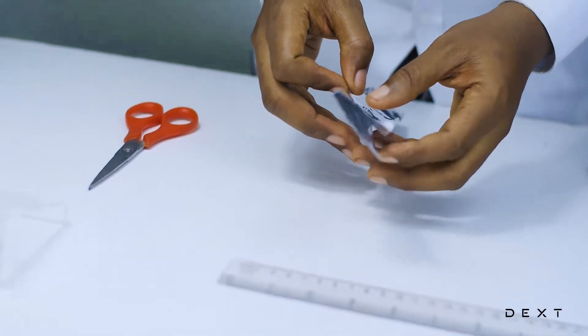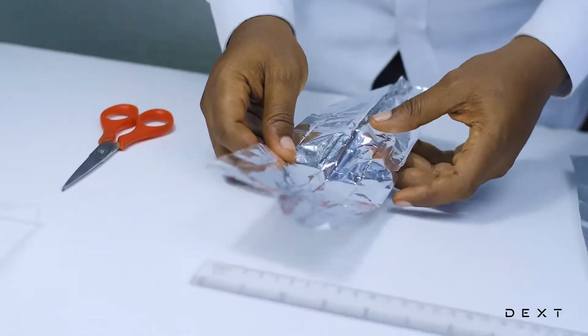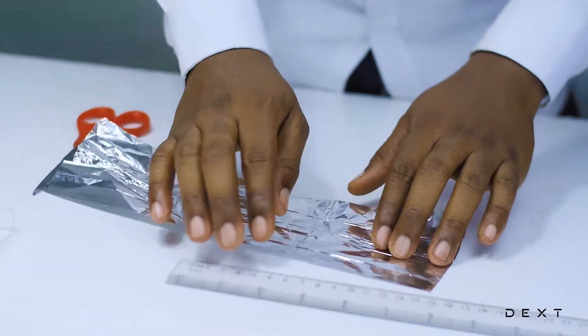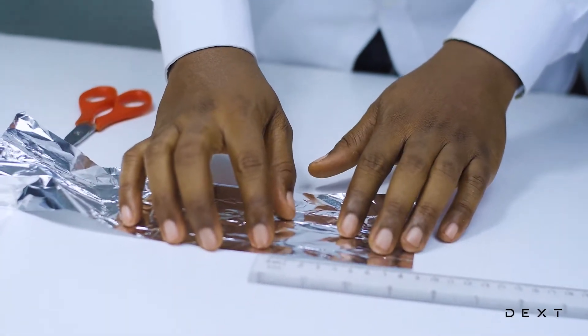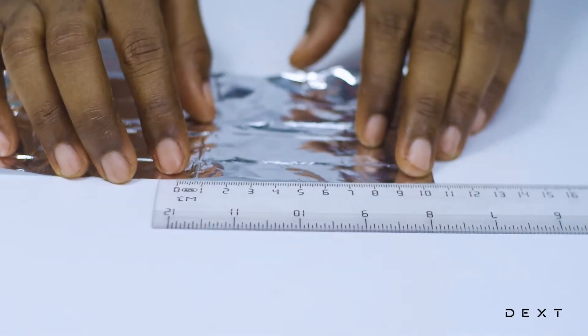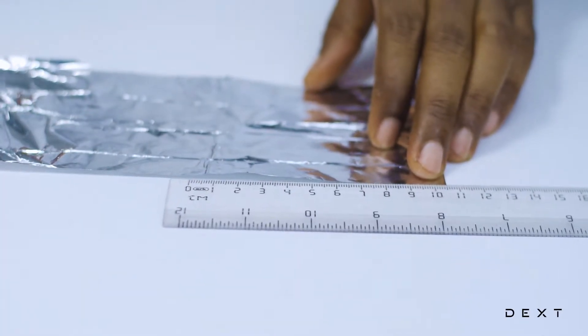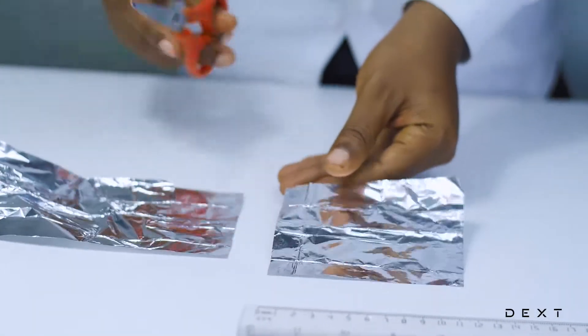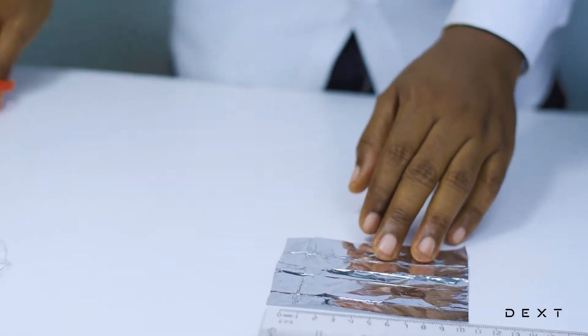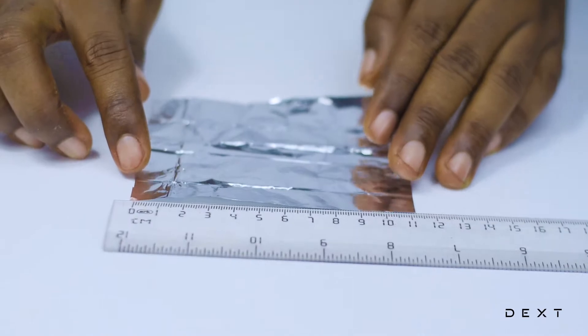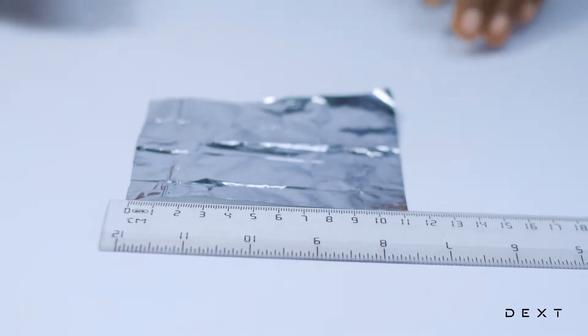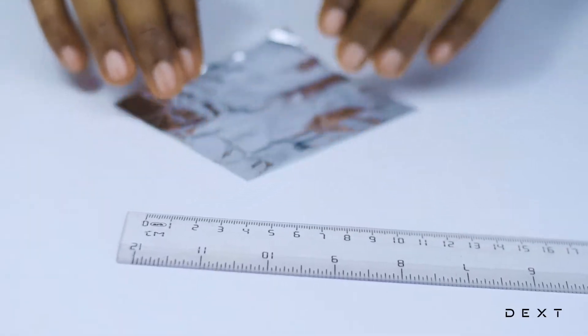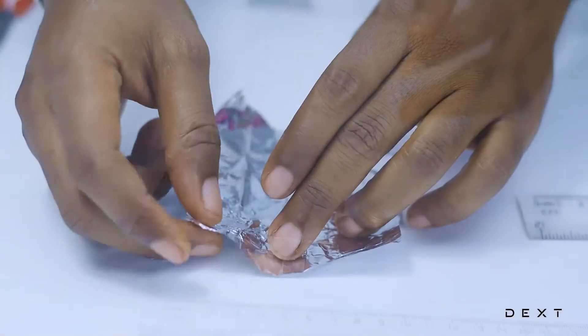Now we are going to open up our aluminum foil and then we are going to measure again, about 10 cm, and we are going to cut the foil along that mark. Great. So now that we have this piece of aluminum foil, which is approximately 10 by 8,